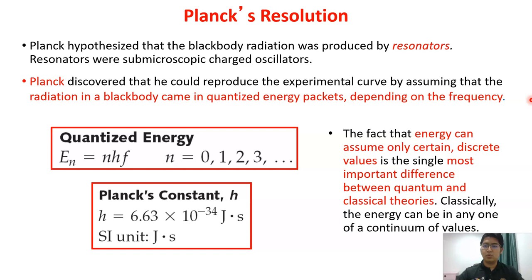Classically, energy can take any one of a continuum of values. The equation for quantized energy is E equals n times h times f, where n equals 0, 1, 2, 3 (integer numbers), h is Planck's constant which is 6.63 × 10⁻³⁴ joule-seconds, and f is the frequency.